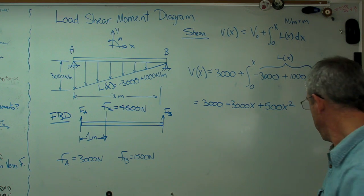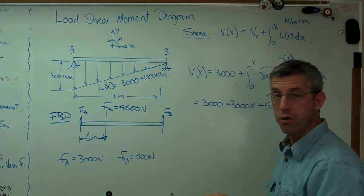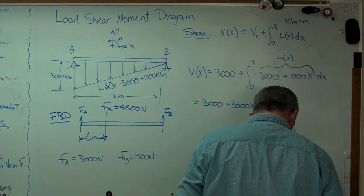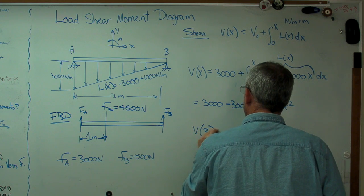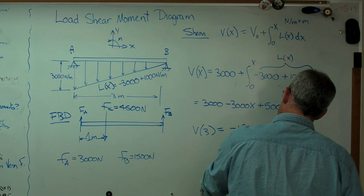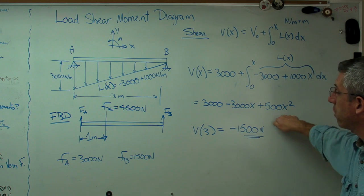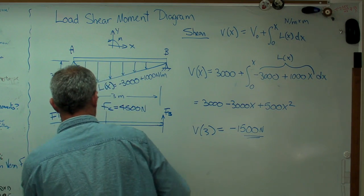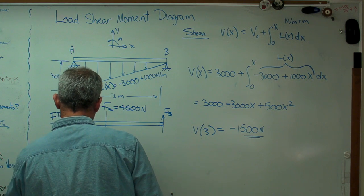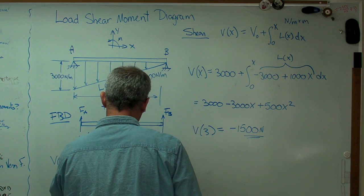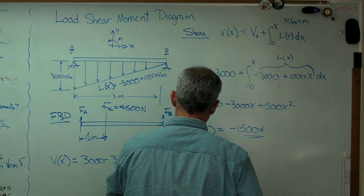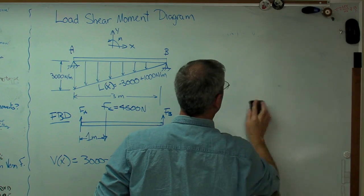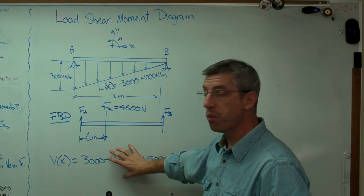Now, if I do that right, I should get minus 1,500 newtons when X equals 3, because that right there is 1,500 newtons, and they better cancel out. If you work this out, it goes minus 1,500 newtons, so that is the correct expression. Now, to make room here, what I'm going to do is I'm going to take this expression and write it over there. Okay, so we're halfway home. We've got the shear expression written out.